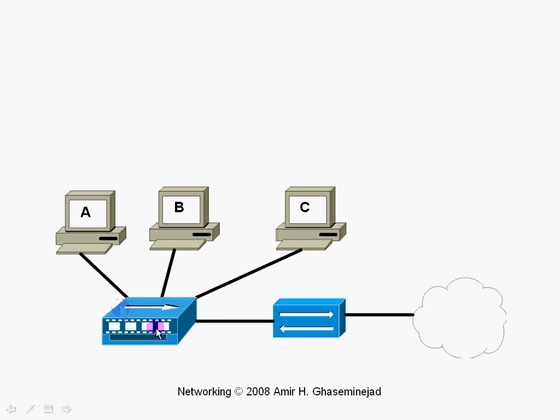The hub is connected to a router, and the router is the interface between the local subnet and the internet, that is shown as a cloud.